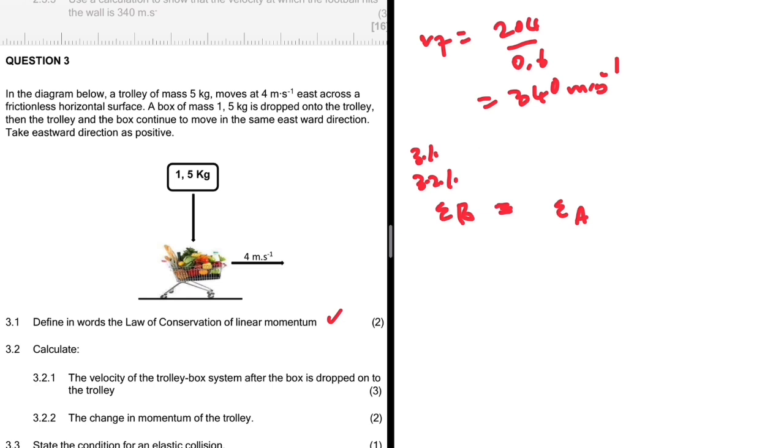So we have m1 v1, that is the momentum of the trolley. And then after the box falls onto the trolley, we're gonna have m1 plus m2 multiplied by vf because they now move as one unit. So the box that is being dropped onto the trolley will have a mass of 1.5, but its velocity along the x-axis is 0.